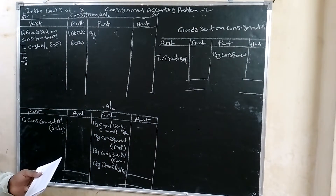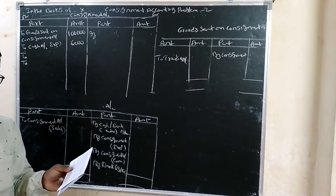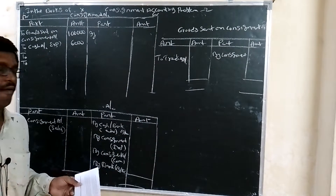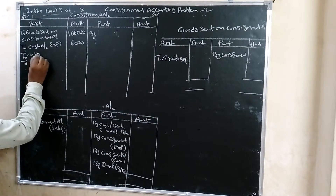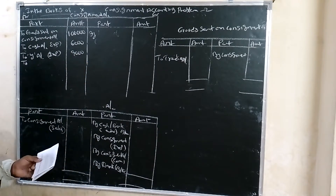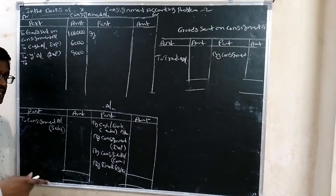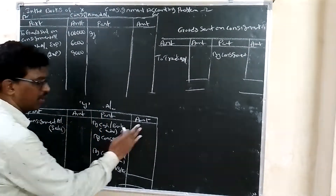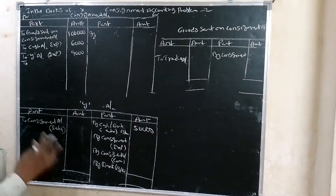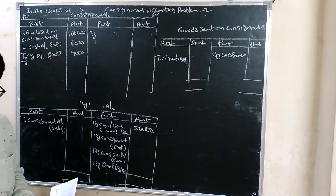After receiving goods, Y pays 4,000 non-recurring and 5,000 recurring expenses, total 9,000 - entry to Y account. Y sends an advance of 50,000 rupees; entry: cash account debit to Y account, 50,000 rupees advance.